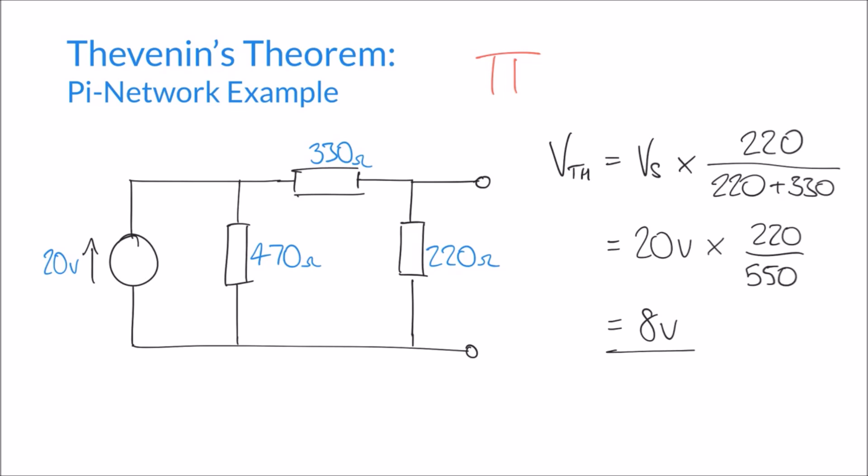The next step in Thevenin's theorem is to calculate the Thevenin resistance. And just like our previous examples, the idea of calculating the Thevenin resistance is to find the resistance from one terminal to the other. And as part of that, we need to short out any voltage supplies.